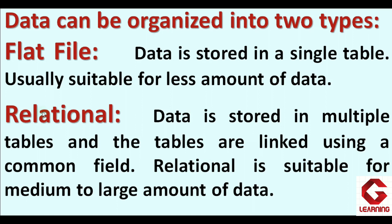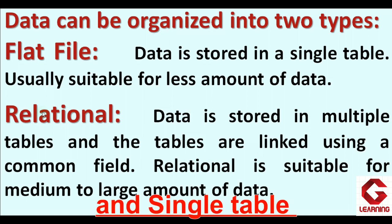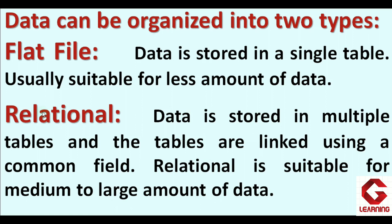If in the database two or more tables are created, that is called data organized in relational form. For example, in a school: one table for details of all students, one more table for the library containing book issue and submission details, and one more table for purchasing done by students from the store. Here three different tables are needed, so this database falls in the relational category. When we have a small amount of data, flat file is sufficient; but if we have two or more tables with a huge amount of data, that is relational.